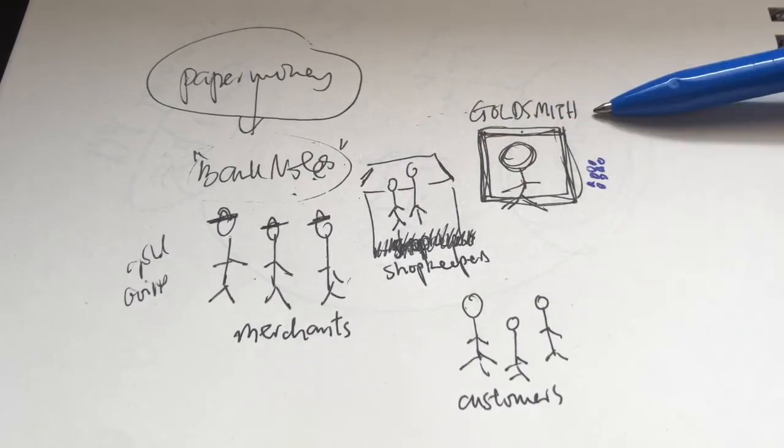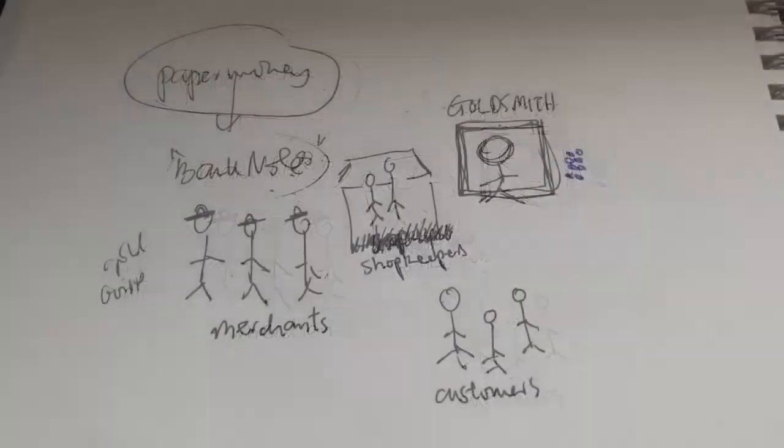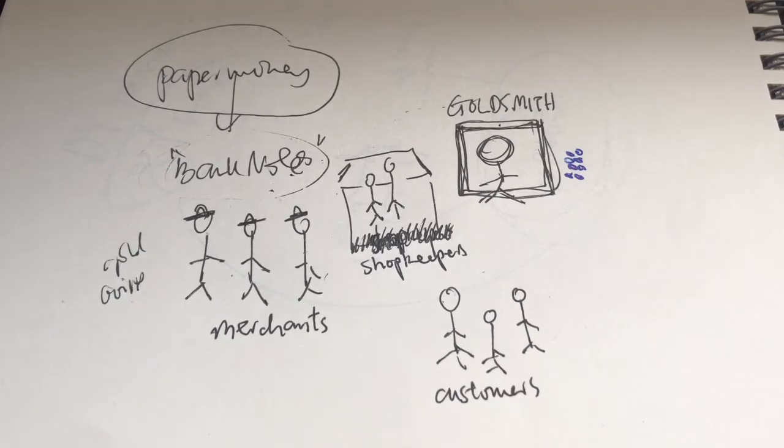So guys, that's basically how the bank was formed. You can say that the goldsmith is actually the bank's great, great, great, great, great grandfather. So you've already learned about the history of money over time as well as the history of how banks were formed rather simply. So now let's take a look at what backs the money supply.